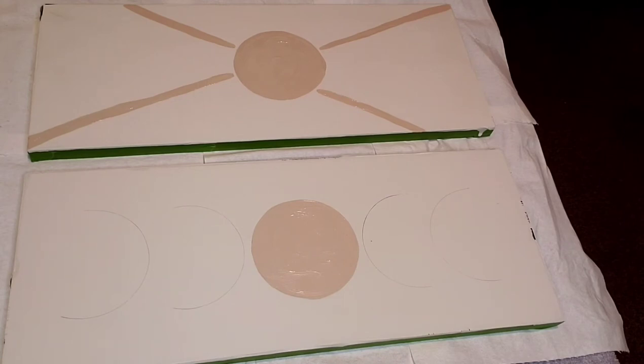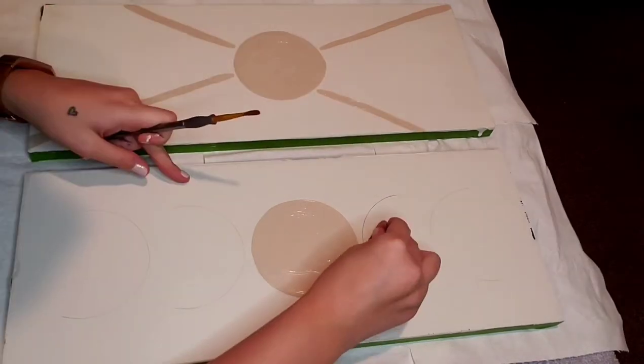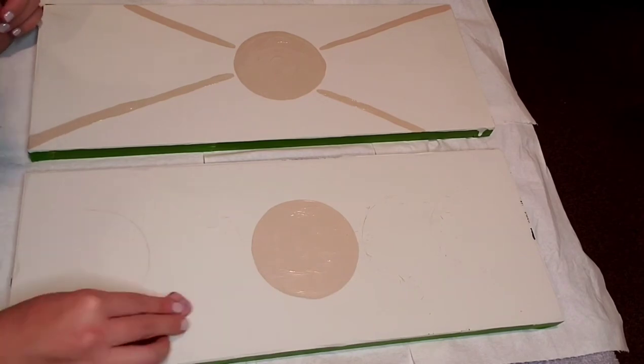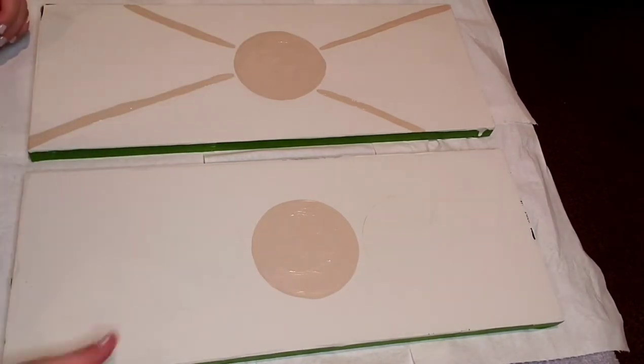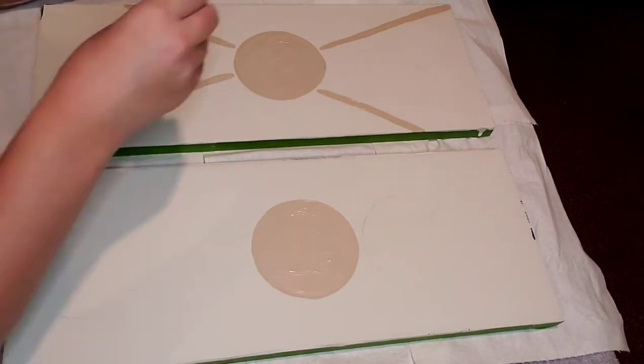Here again you can see me going in with an eraser to sort of lighten up these lines in the half circles, just so I can barely see them. I didn't want to be able to see the pencil through the paint.